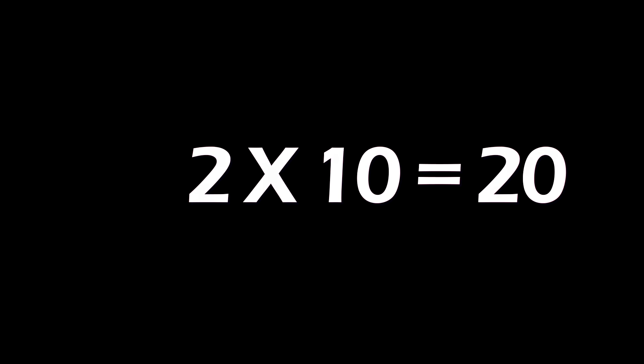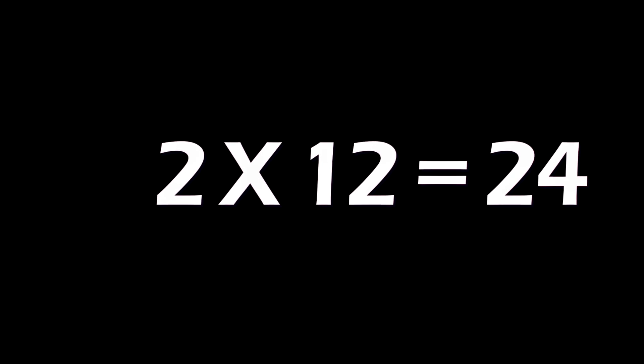Two times nine is eighteen. 2 x 10 is 20. 2 x 11 is 22. 2 x 12 is 24.